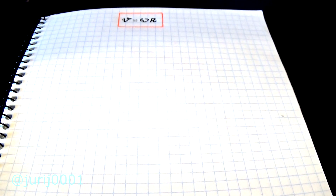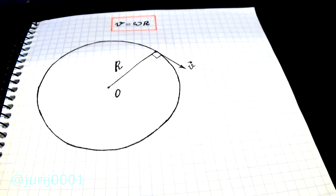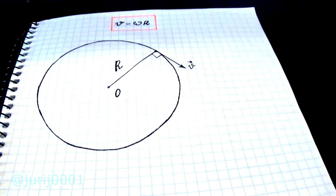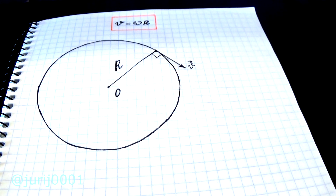Well, let's get started. Let's draw a circle of radius R. Let's write what is linear velocity and what is angular velocity. I'll write this in scalar form without vectors.